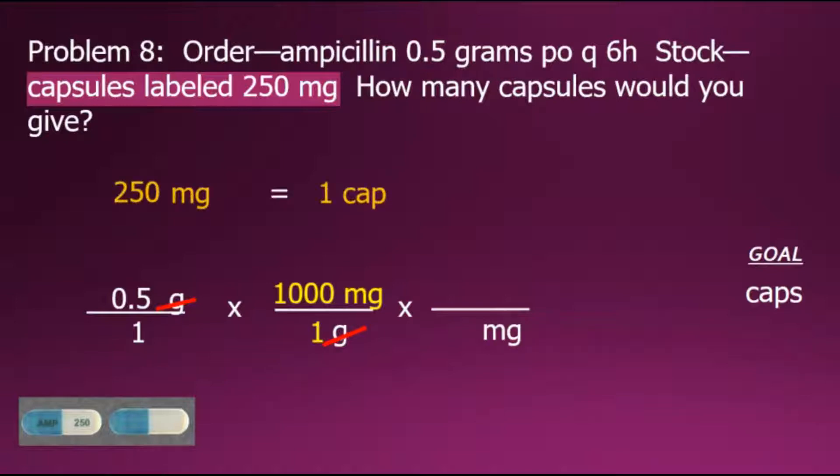Using the information supplied in the problem where 250 milligrams equals one capsule, we'll arrange this for our conversion fraction, which will allow us to cancel out milligrams in the numerator and denominator since they have a value of 1.